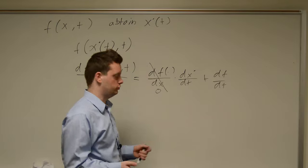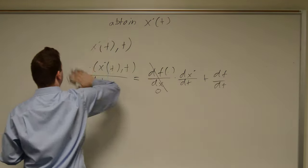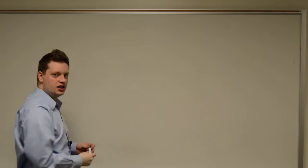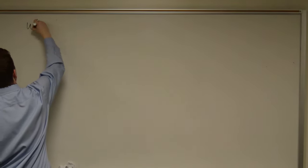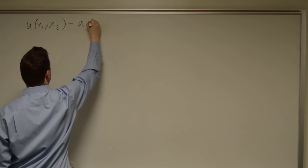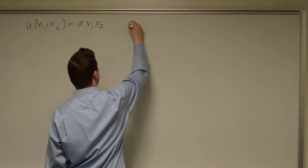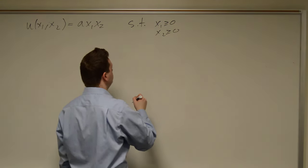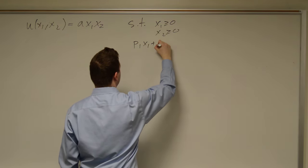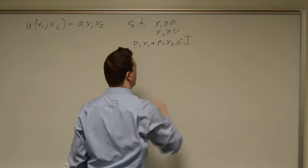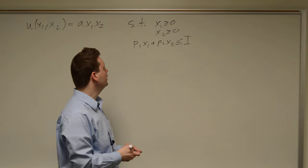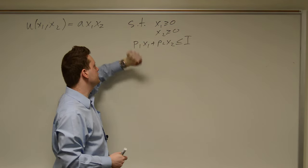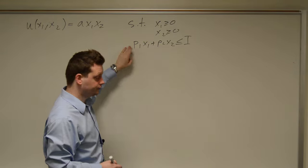Let's apply this to an example. We take a utility maximization with a budget constraint: u of x1 and x2 is equal to a times x1 times x2, such that x1 ≥ 0, x2 ≥ 0, and p1·x1 + p2·x2 ≤ income i. So we have this utility maximization problem subject to three constraints: two non-negativity constraints and a budget constraint.